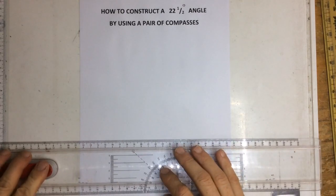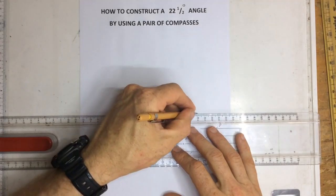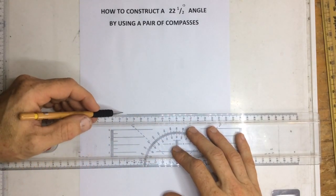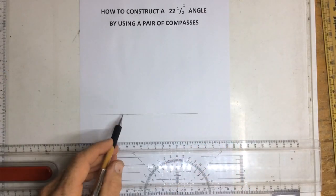Step number one, what we're going to do is we're going to draw a line, any length. I'm going to draw a construction line coming up from the end of that line, just a little bit.